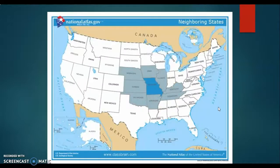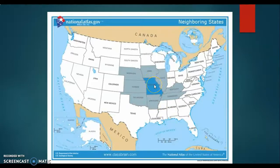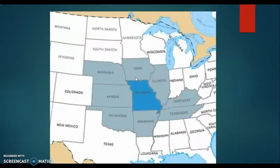Now we're going to look at the United States. The United States is one country in the continent of North America. As you can see, Missouri is the darker blue in the middle. Today, we're going to look at Missouri being in the middle of the country, and we're going to look at all the states that touch Missouri. We call those the surrounding states of Missouri. So today, we are going to focus on the surrounding states.